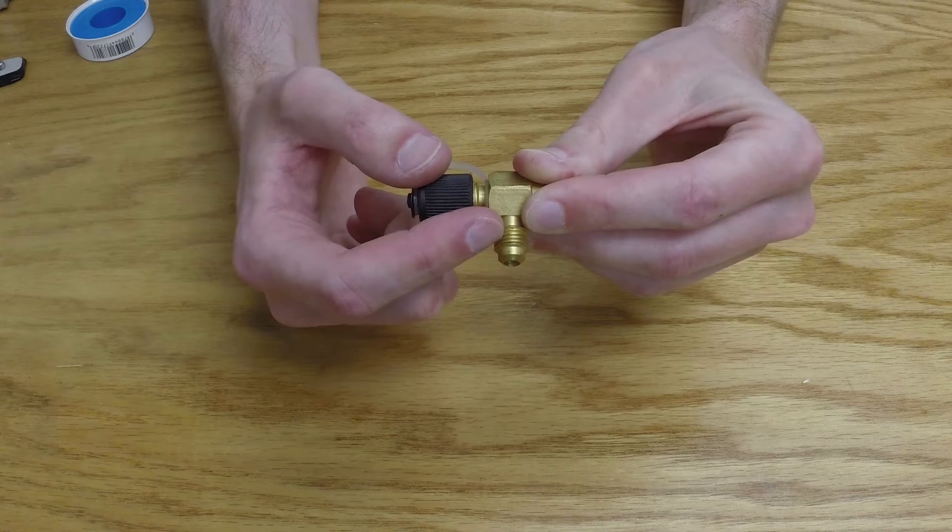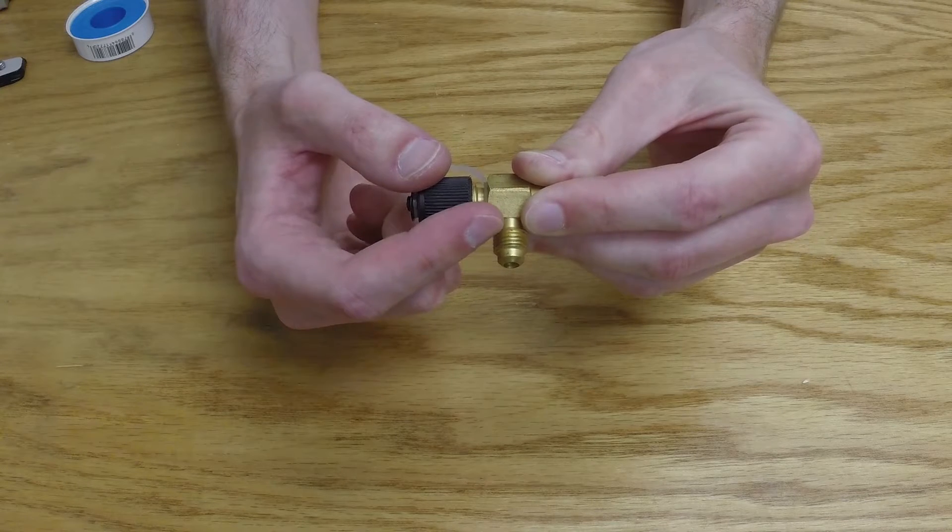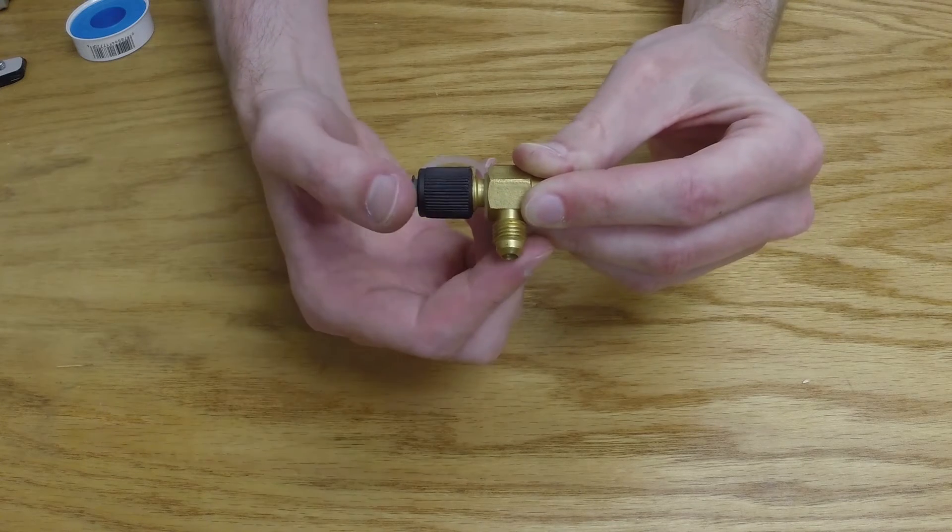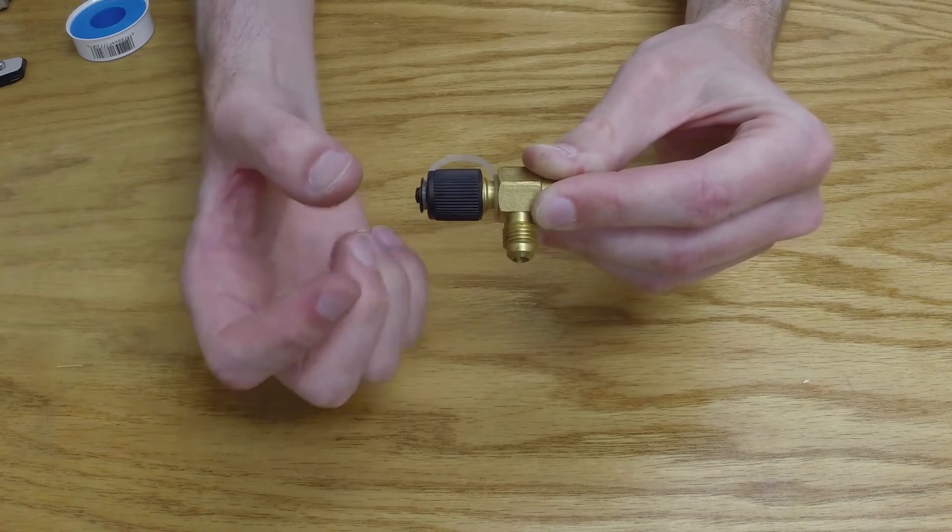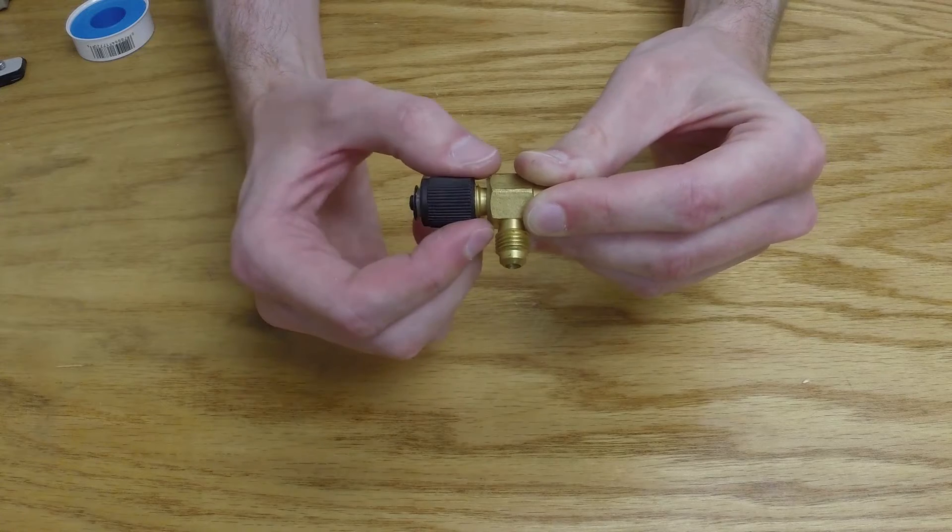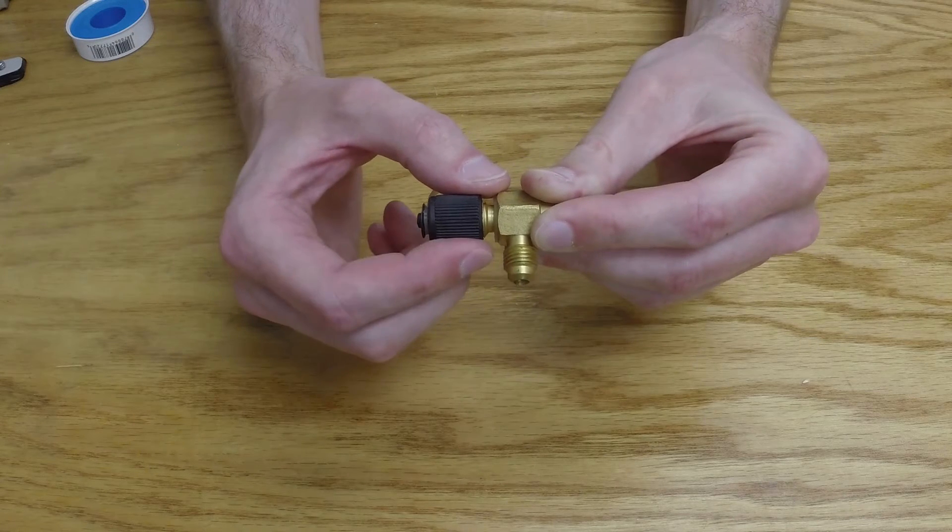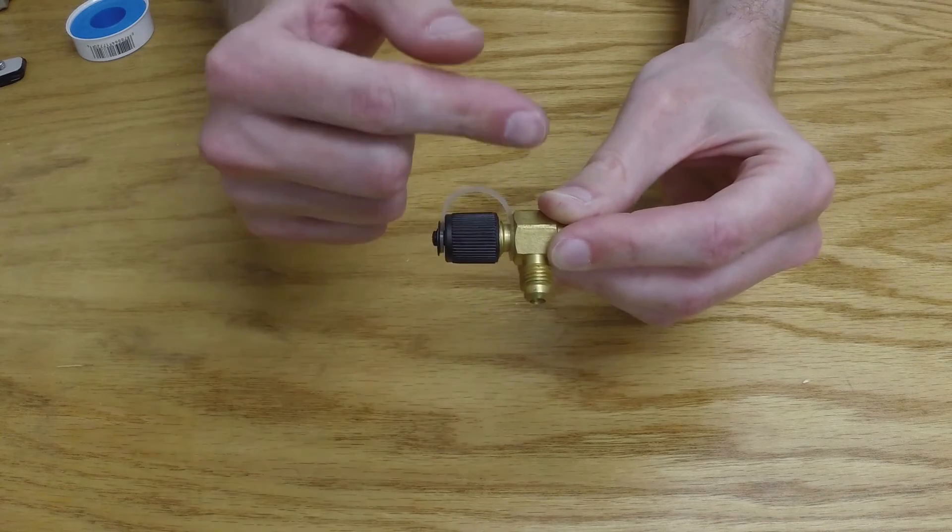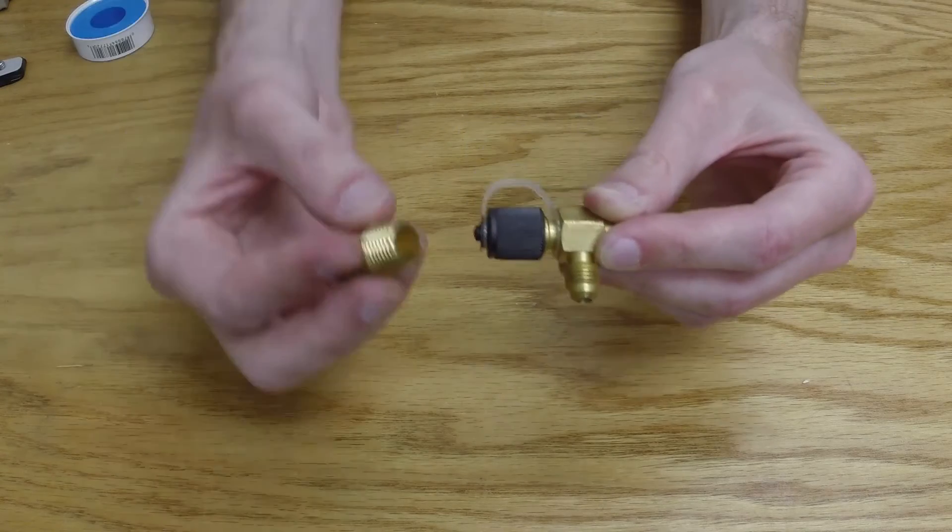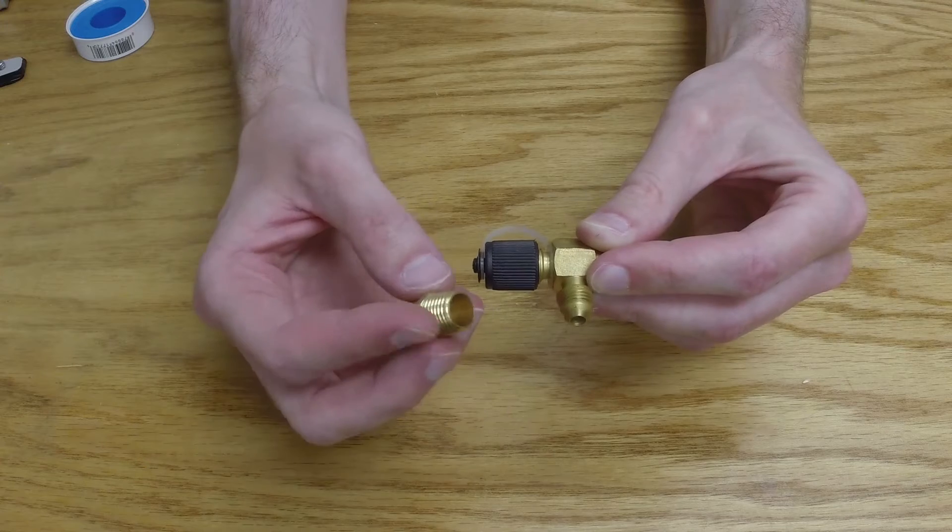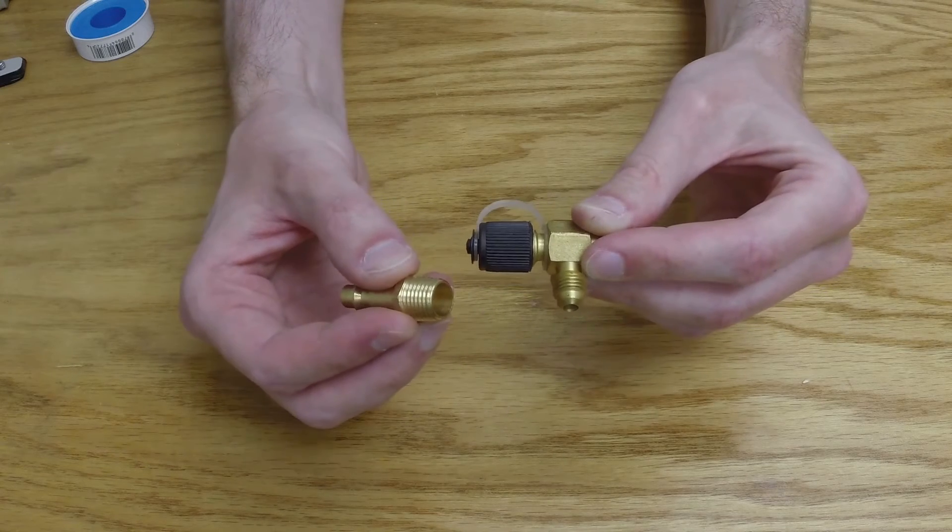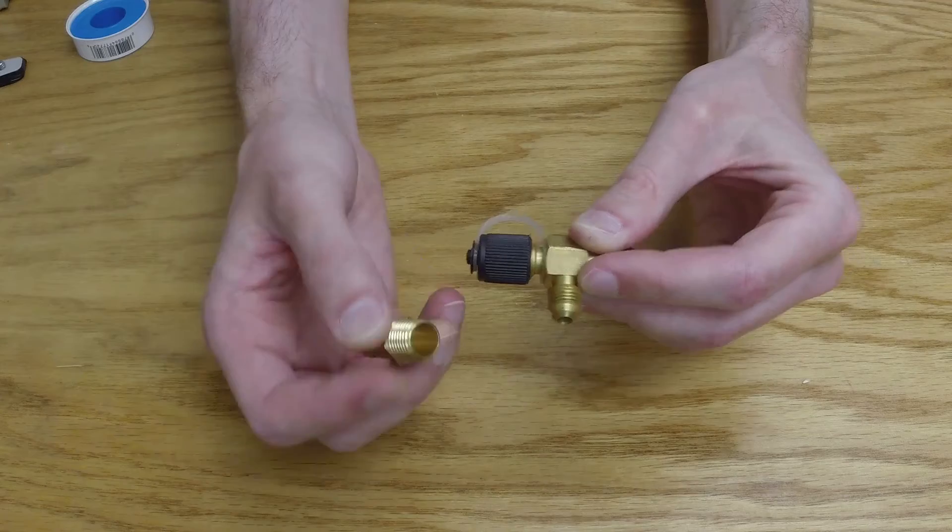The threads allow compressive force to be developed so that when you tighten this down, this flare is being pushed more tightly against the matching flare on the other fitting, thereby creating a seal. So with this and our previous tapered thread seal, the actual parts themselves are sealing to each other. There's no intermediary.